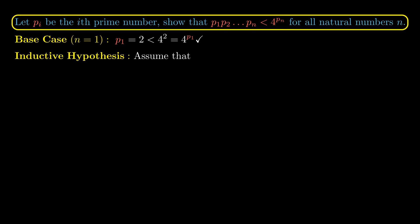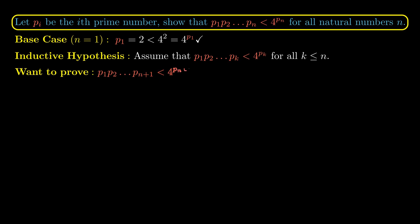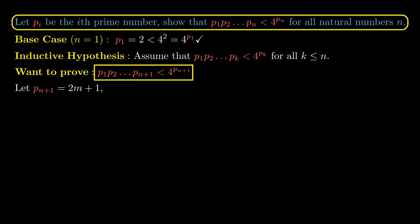For our inductive hypothesis, we assume that this inequality holds for all k less than or equal to n, meaning that the product p_1 · p_2 · … · p_k is less than 4 to the power of p_k whenever k ≤ n. Then we shall prove it also holds for n+1 — that is, the product p_1 · p_2 · … · p_{n+1} is less than 4 to the power of p_{n+1}. Here I let p_{n+1} = 2m+1, where m is a natural number, noting that since p_{n+1} is odd, it is possible to write it in this form.